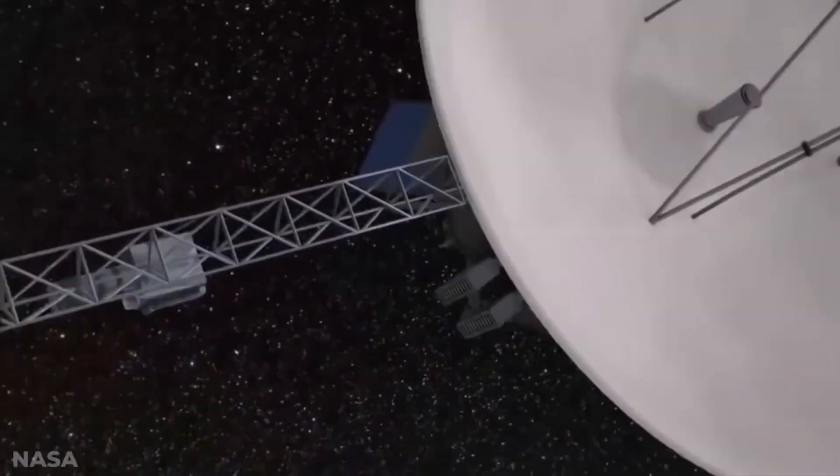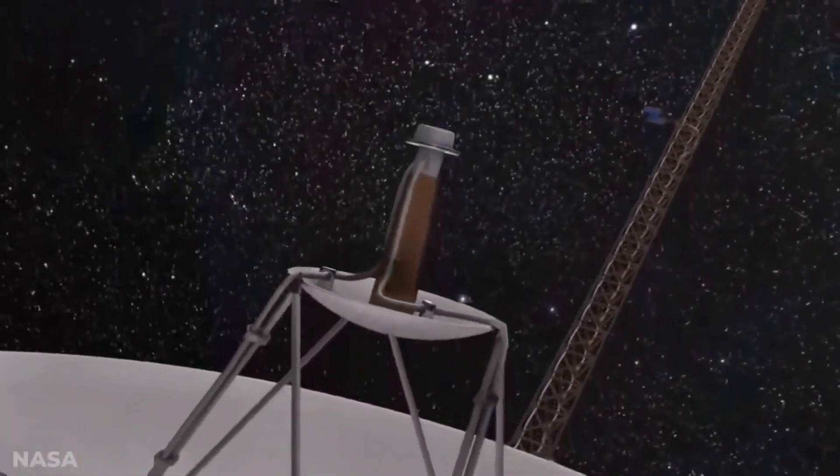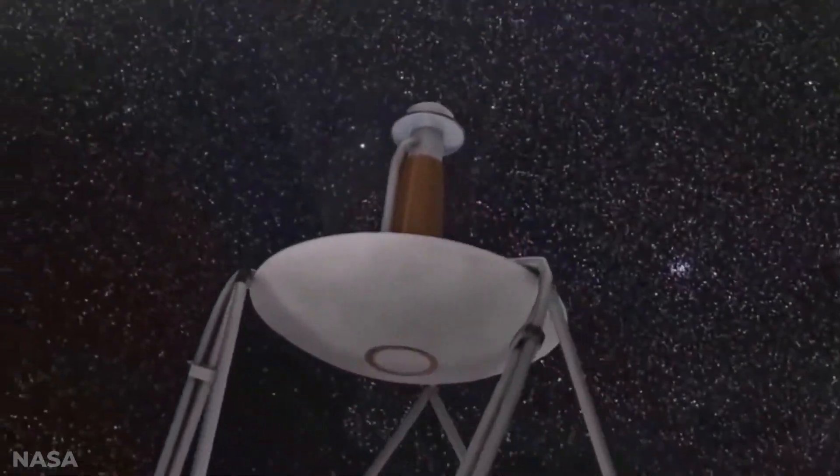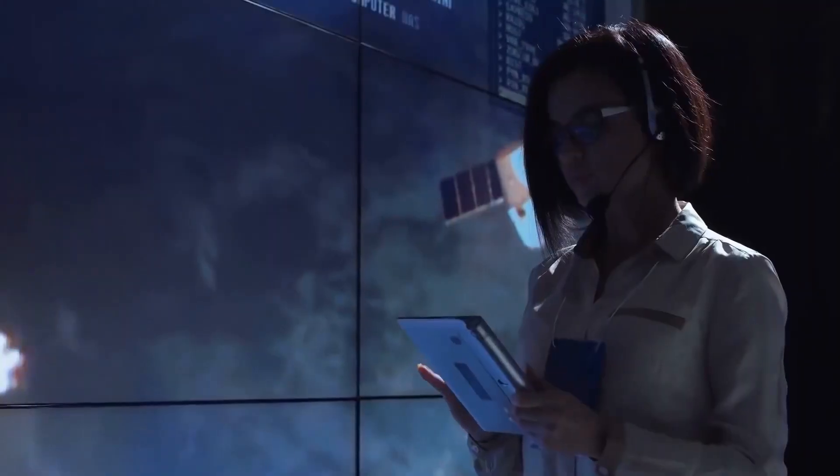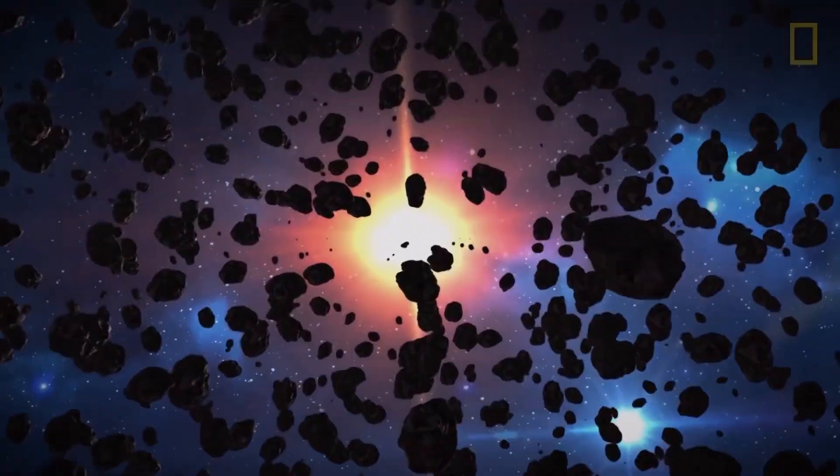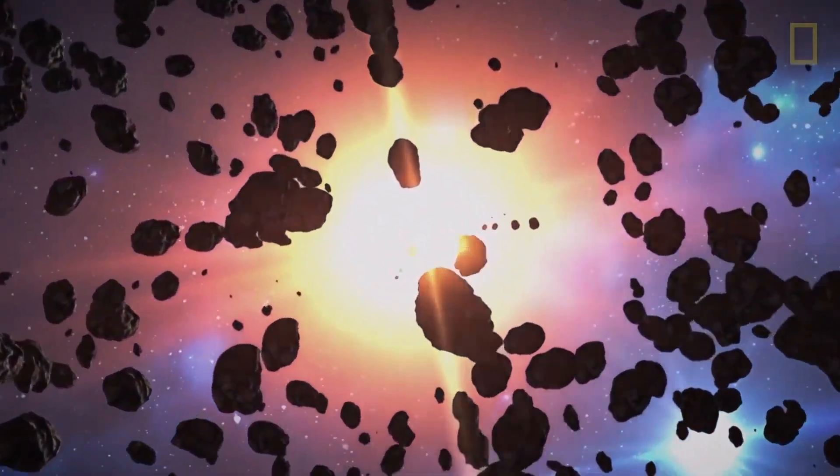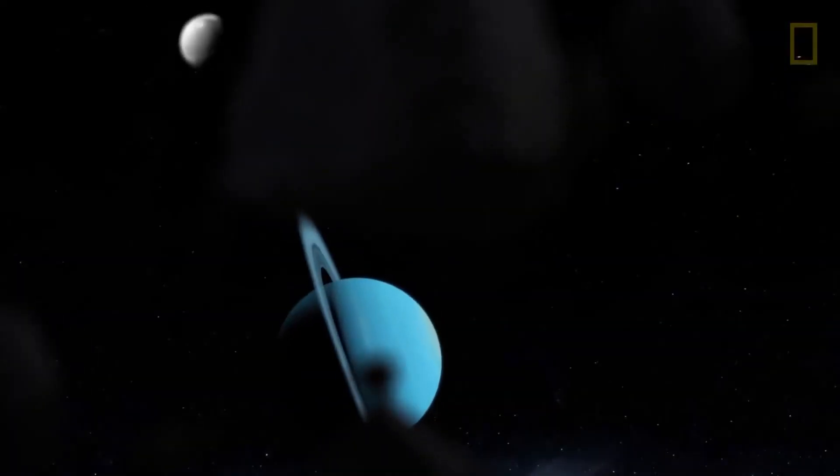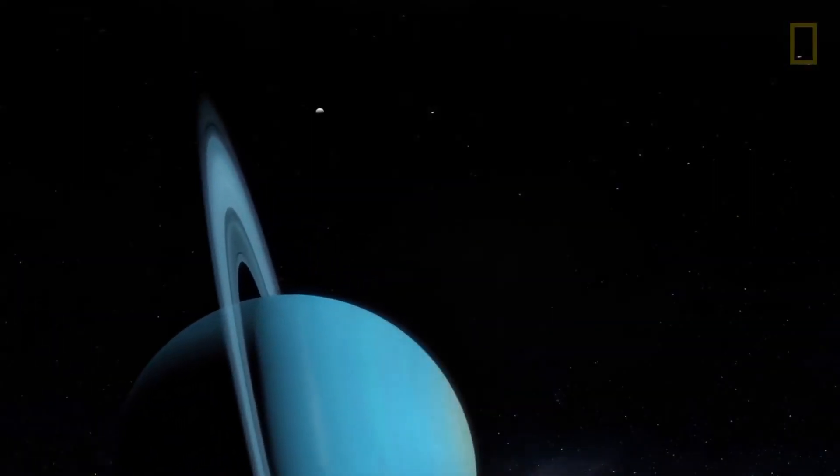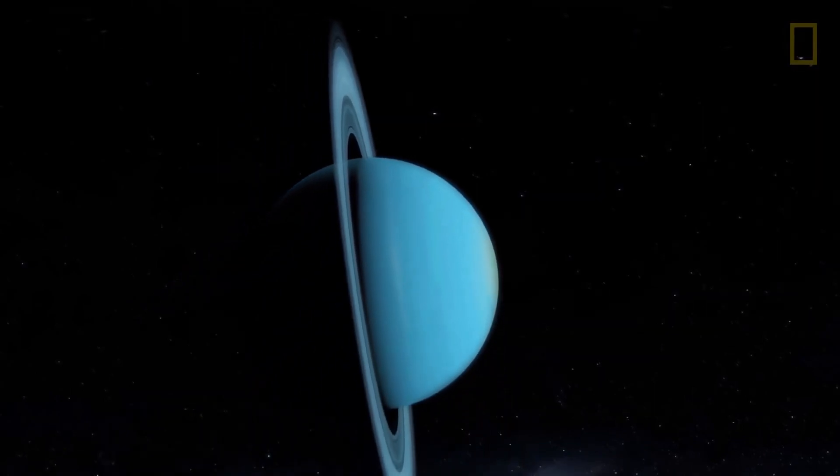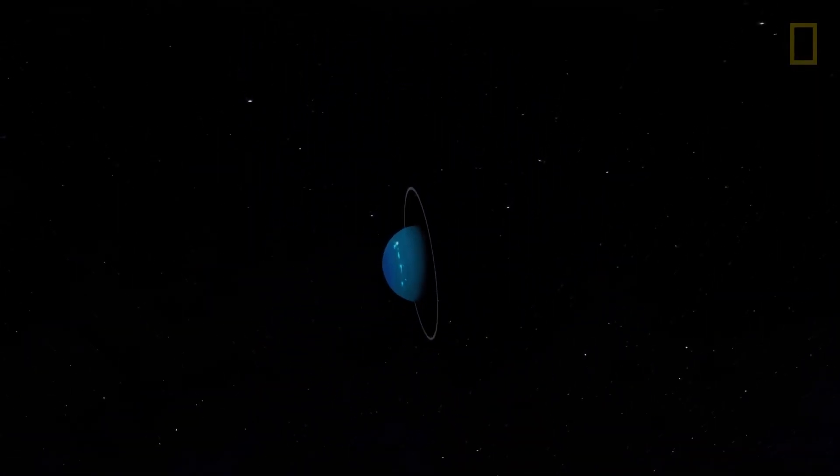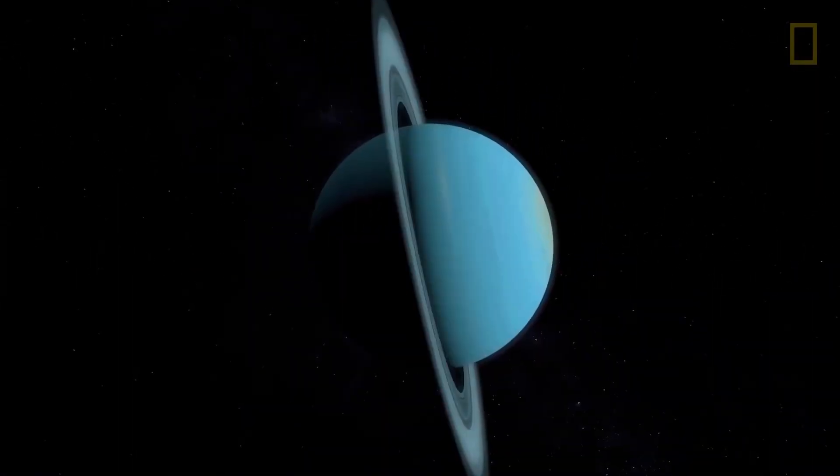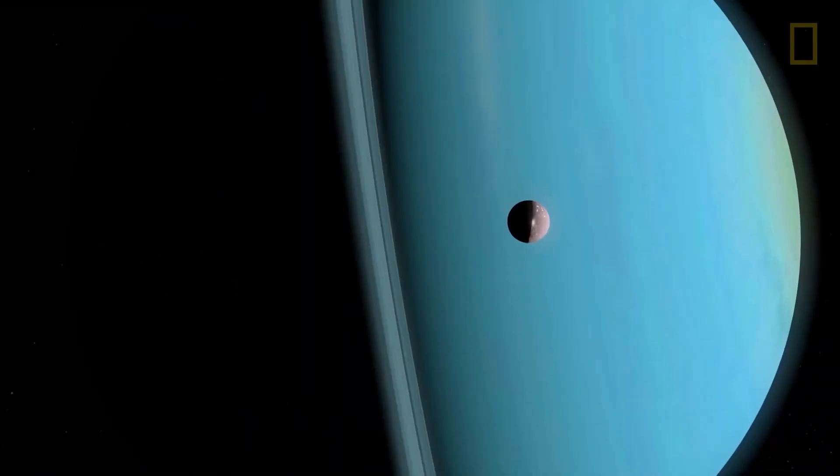During its flyby, Voyager 2 discovered 10 little moons, two new rings in addition to the older nine rings, and a magnetic field that tilted at 55 degrees off-axis and off-center. The spacecraft found wind speeds in Uranus' atmosphere as high as 700 kilometers per hour, and found evidence of a boiling ocean of water some 800 kilometers below the top cloud surface. Its rings were found to be extremely variable in thickness and opacity.